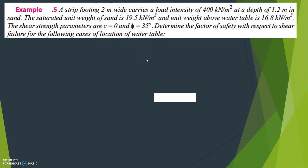We need to determine the factor of safety with respect to shear failure for different locations of the water table. The factor of safety is the net ultimate bearing capacity divided by the actual load capacity. The actual load intensity given is 400 kilonewton per meter square, so we need to calculate the net bearing capacity.